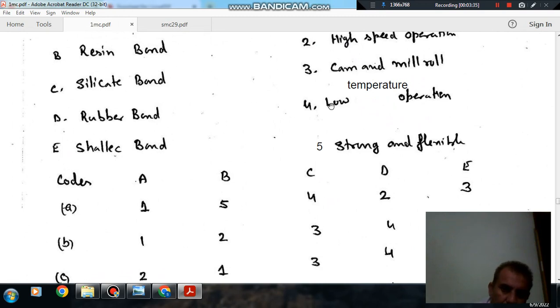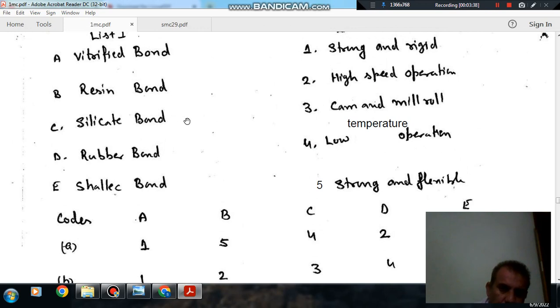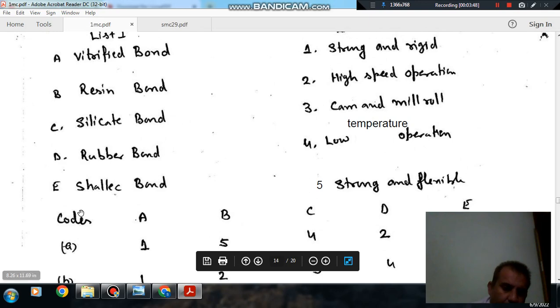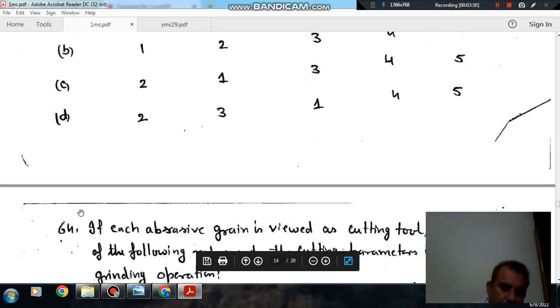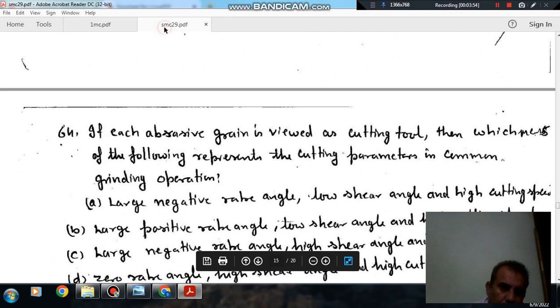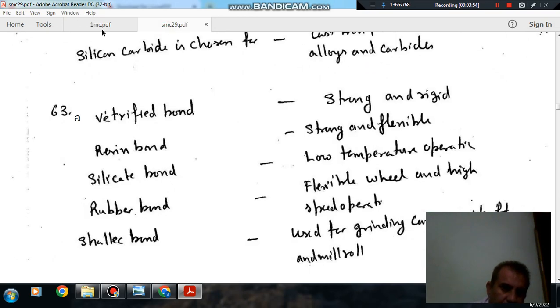Silicate bond is used for low temperature operation. And D is 2, rubber bond is used for high speed operation, and shellac bond is used for cam and mill roll. So answer is option A.